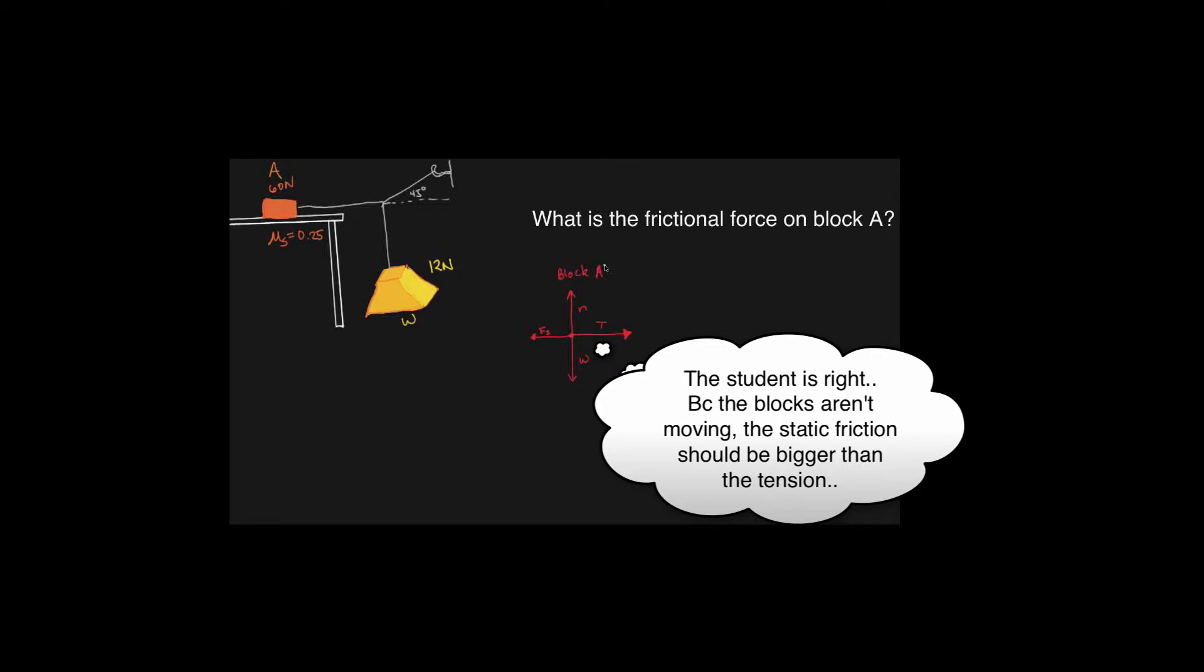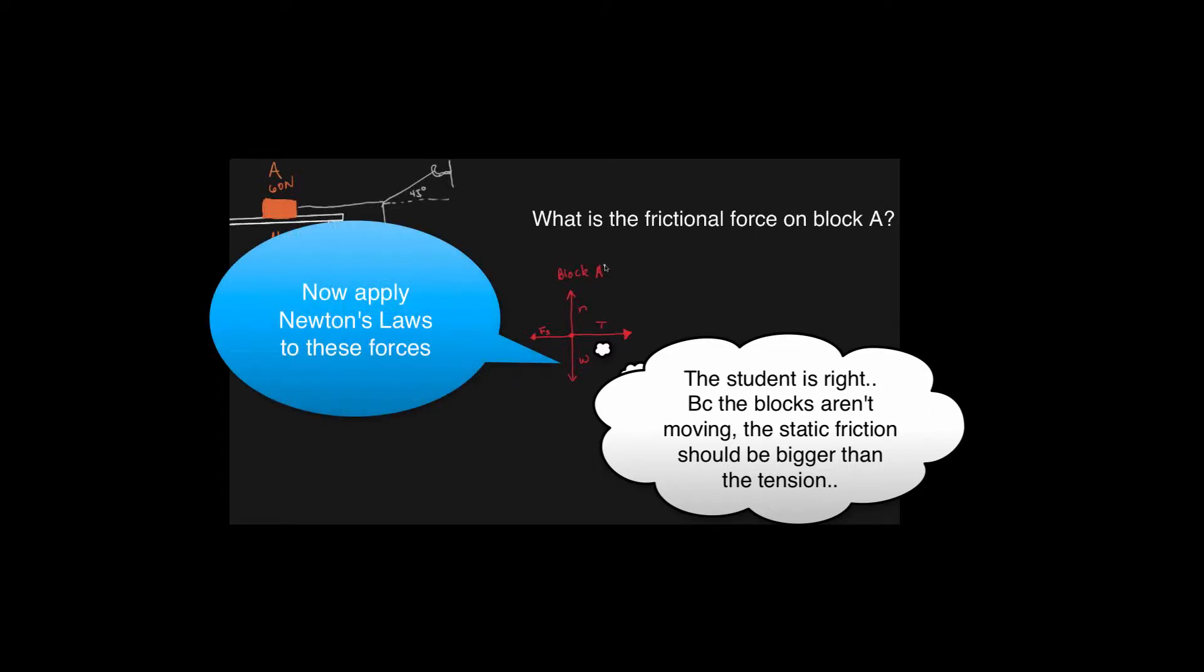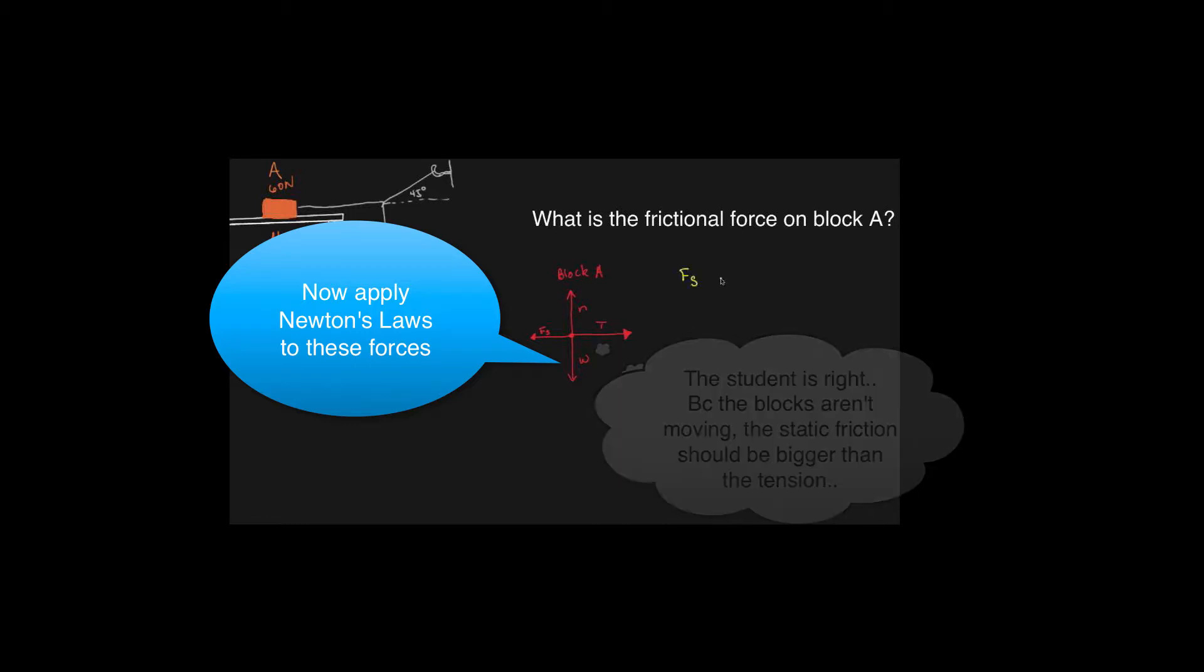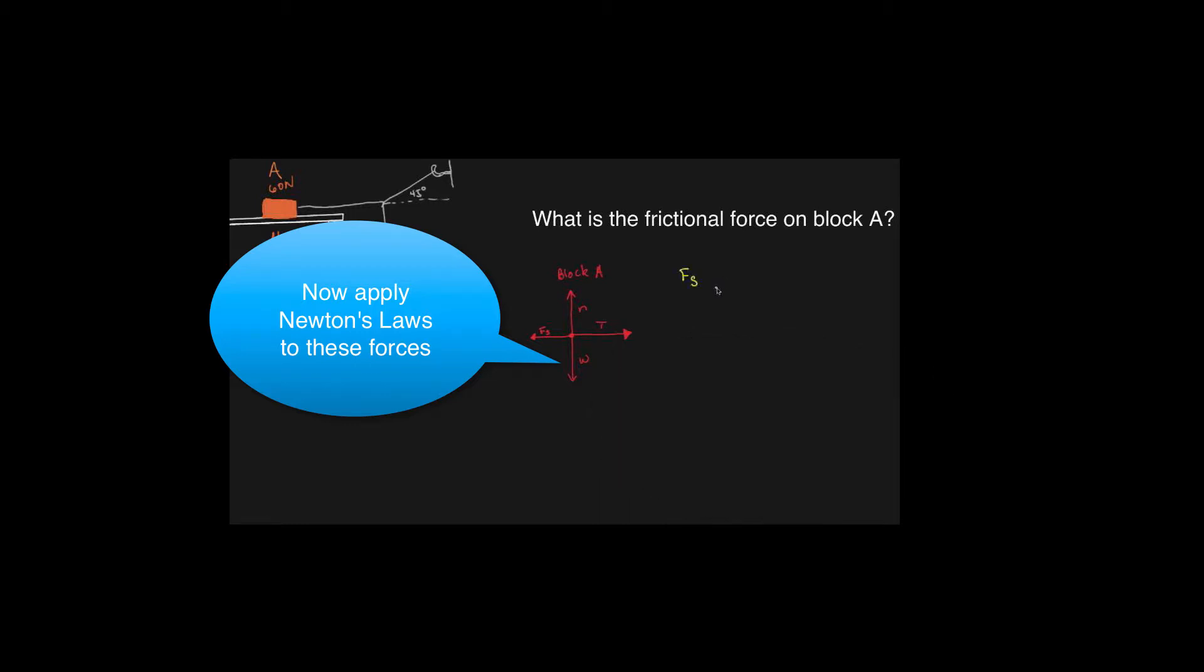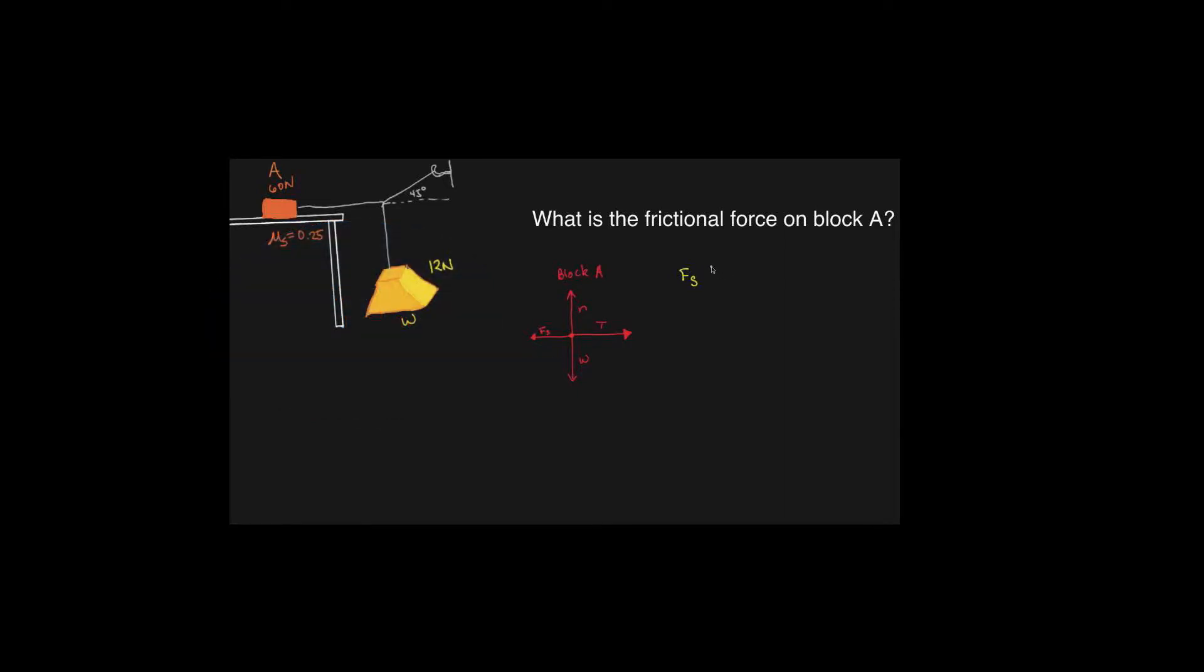How do we find the F of x? What do we know that there is a formula for F sub s? What is that? Mu times F normal. Good, and because it's not moving we know that we are smaller than this.